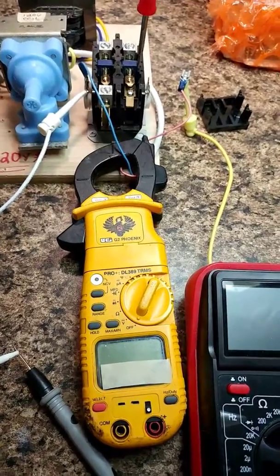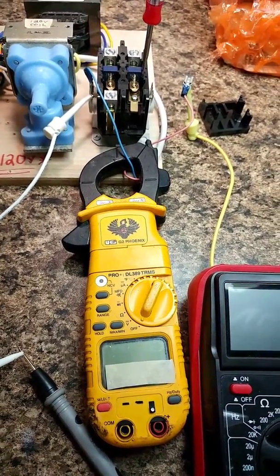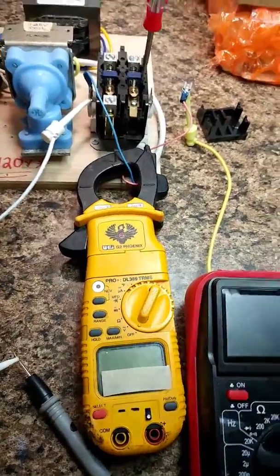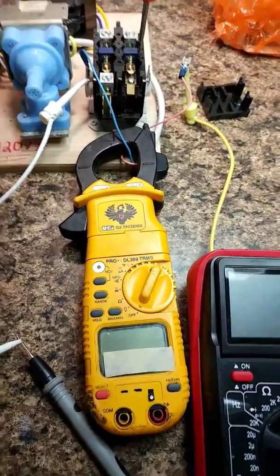And you'll usually notice it because you'll see a heavier spark. But if you've got your amp probe on it, you'll notice it. And then you can just kind of go to that circuit and isolate it.